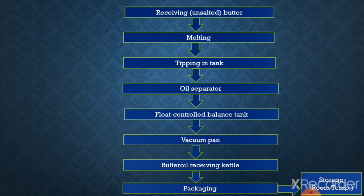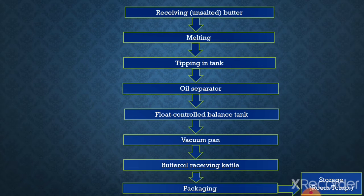From the oil separator, the oil flows into the float control balance tank and then into the vacuum pan due to suction, where it is dehydrated at a temperature of 56 to 63 degrees Celsius under a vacuum of 57 to 62 centimeters of mercury. At the end of the operation, the vacuum is broken and the butter oil is allowed to flow by gravity into the receiving kettle for subsequent cooling. After that, the butter oil goes into the packaging and storage section, which takes place at room temperature.